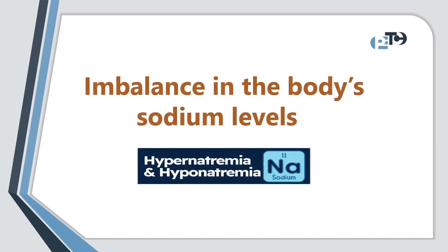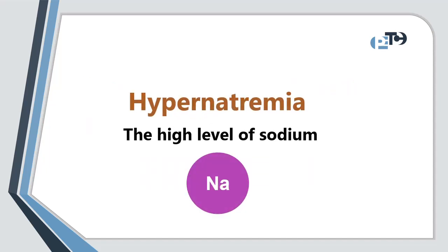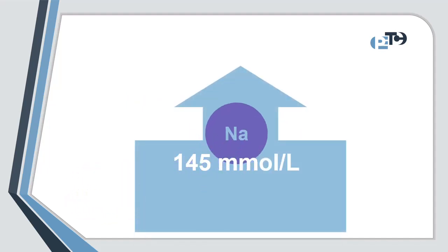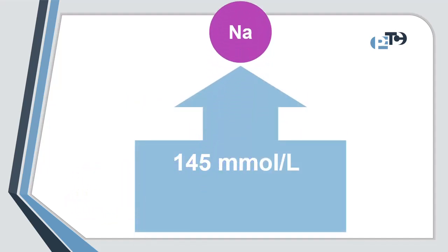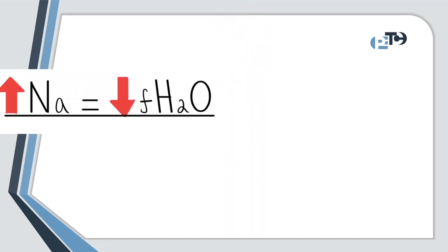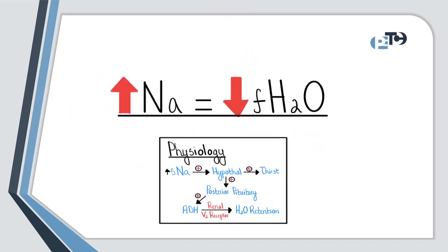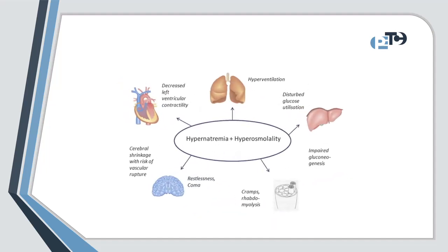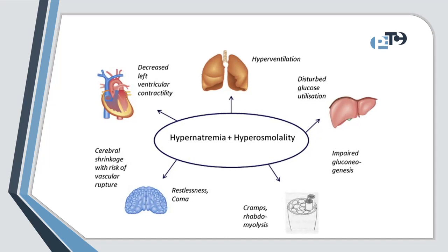Hypernatremia is defined as a serum sodium concentration exceeding 145 millimoles per liter. It is indicated as an excess of sodium relative to water in the bloodstream, leading to hyperosmolarity. This condition is particularly concerning in elderly and critically ill patients, where it can lead to severe outcomes if not managed properly.